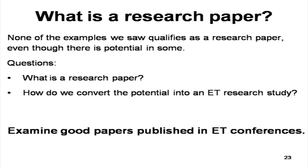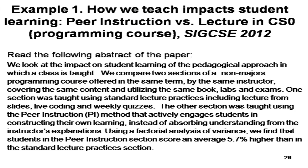In order to explore what is a research paper, we will first examine some good, strong papers that have already been published in educational technology conferences. Looking at these papers and analyzing the features in them will give us an idea of what a research paper is. Let us look at some different types of educational technology research papers — specifically, research studies related to innovative classroom or lab strategies implemented to improve student learning. The title of one paper is 'How We Teach Impacts Student Learning,' and the authors have compared two methods: peer instruction or peer discussion, and a lecture method, in a programming course.